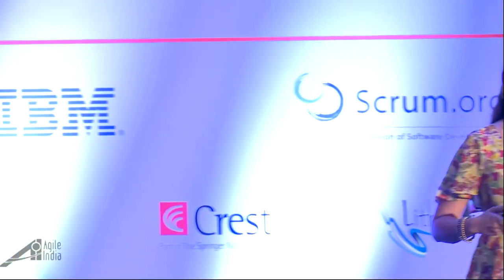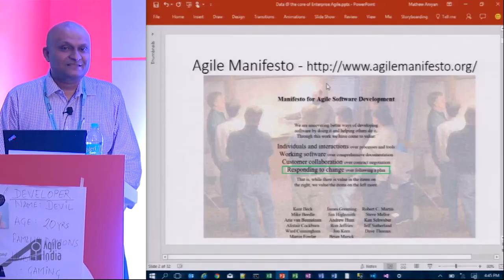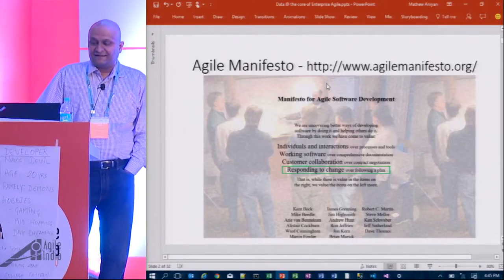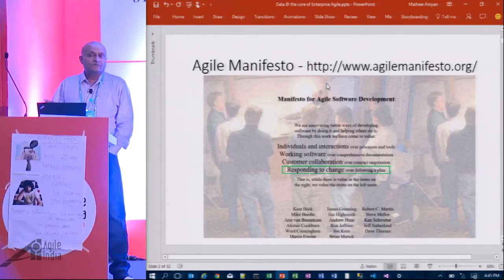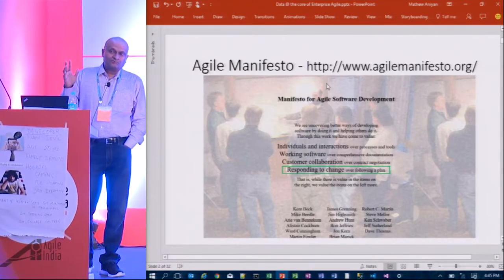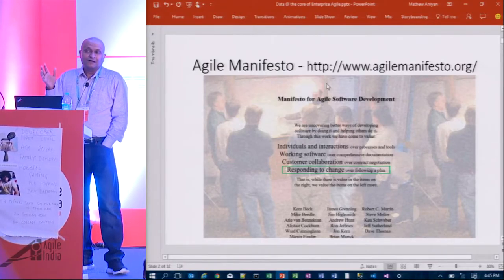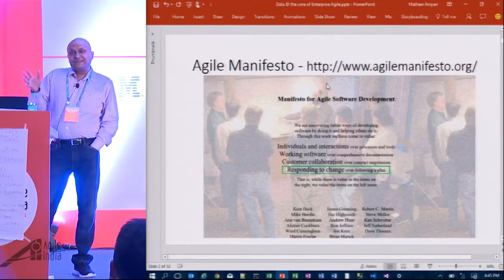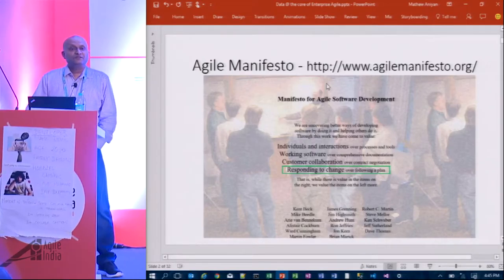We started about more than five years ago, and we have been keeping continuous core three-week sprints doing Agile. I think all of you must have seen the Agile Manifesto — this is where the story started. In this talk, I'm really going to focus on responding to change. I want to understand from you: how do you recognize that there is some change happening to your requirements?